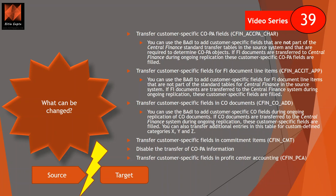You have options to add more customer-specific fields into ACCIT, which results in your FI document line item. So if you are moving something in FI, your accounting document can have customer-specific fields added. Similarly, in CO, you can add customer-specific fields using CFIN_CO_ADD. You can also add customer-specific fields in commitment items and profit center accounting documents.